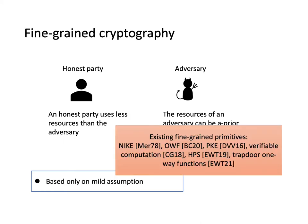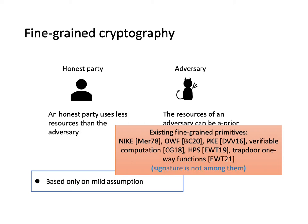This field was initialized by Merkle and there have been many fine-grained primitives proposed such as key exchange, one-way functions, PKE, verifiable computation, hash proof systems, and trapdoor one-way functions. But notice that there are still many important fine-grained primitives that are not known to exist such as signature.